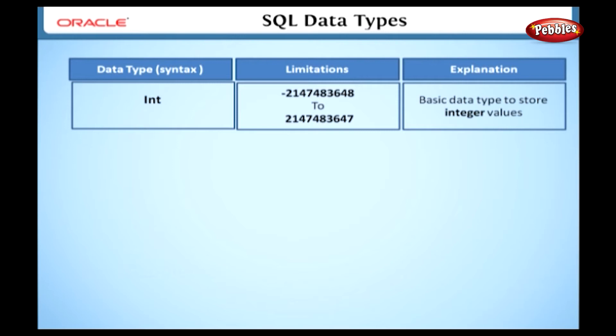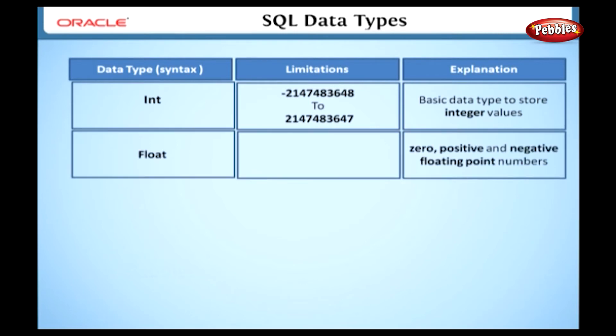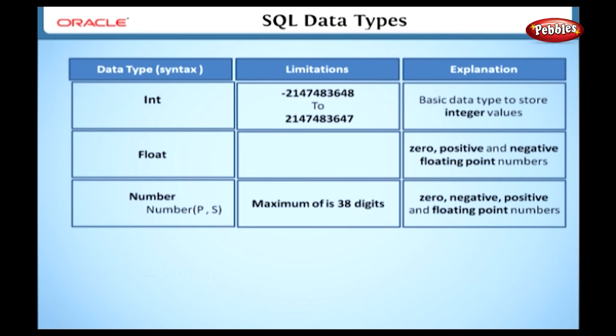First, we will see integer. This is integer data type. It is a basic data type to store integer values. The next type is float. This is the float data type. Here we can store zero, positive, and negative floating point numbers.